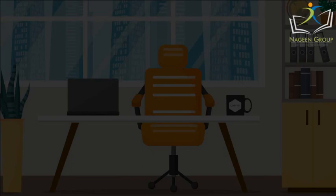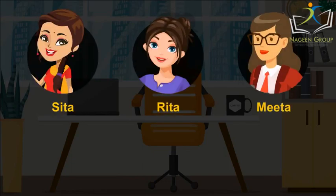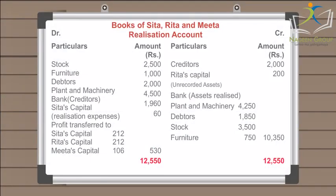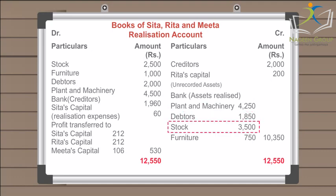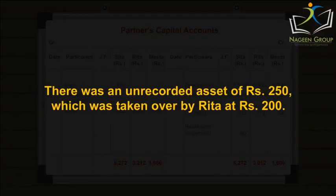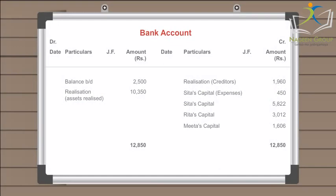Example: Sita, Rita and Meeta are partners sharing profit and losses in the ratio of 2:2:1. Their balance sheet as on March 31, 2007 is given. They decide to dissolve the business. The following amounts were realized from Plant and Machinery. Sita agreed to bear all realization expenses; for this service, Sita is paid ₹60. Actual expenses on realization amounted to ₹450. Creditors paid 2% less. There was an unrecorded asset of ₹250 which was taken over by Rita at ₹200. Prepare the necessary accounts to close the books of the firm.